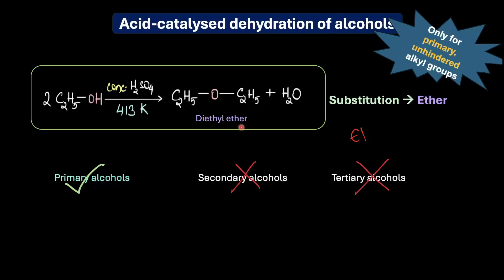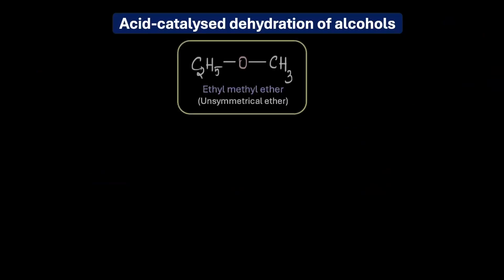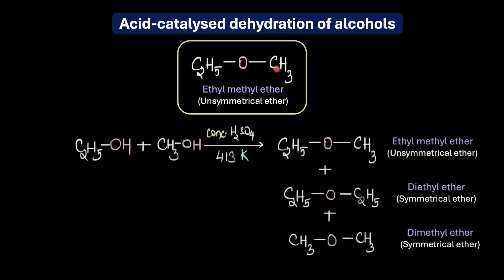You see we can prepare only symmetrical ethers via acid-catalyzed dehydration. Attempting to prepare unsymmetrical ethers via this method would fail miserably. For example, if you try to prepare an unsymmetrical ether like ethyl methyl ether then we would obviously need two different alcohols: ethanol and methanol in the same pot. Ethanol to get this ethyl group and methanol for the methyl group.